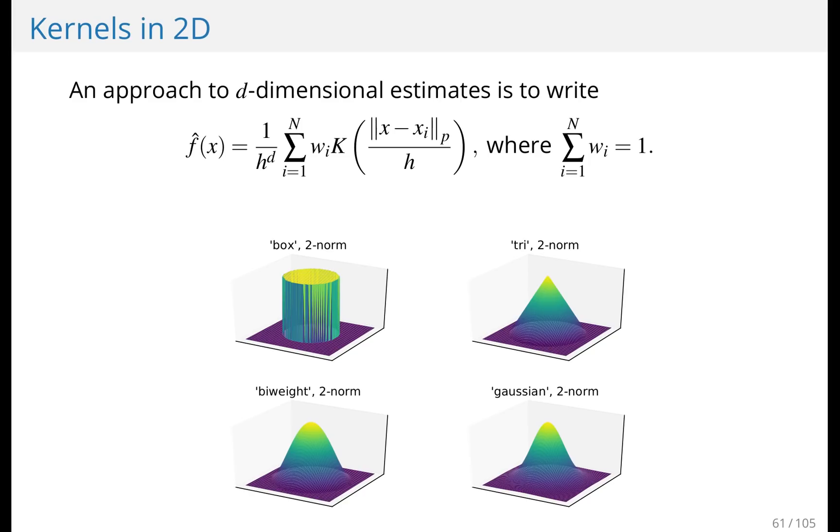Let's go to the dimensions, or more specifically, let's go to two dimensions. If you want to extend to higher dimensions, one way to do it is to introduce a norm. Because you need some measure of distance in higher dimensions, and there are several to choose. So you're going to choose a P norm, for instance, and you're going to replace the one over H with one over H to the power of D to normalize. And apart from that, it's the same thing.